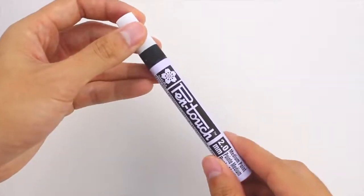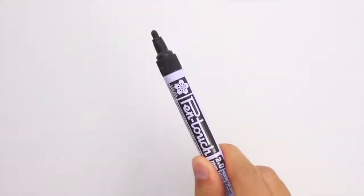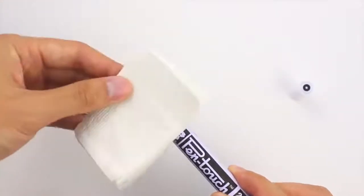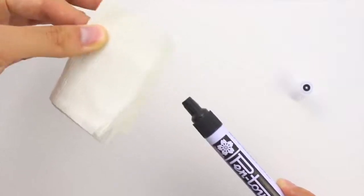First, hold the marker vertically with the nib facing upward and remove the cap. Next, use a folded tissue to pull out the tinted nib so the permanent ink doesn't get on your fingers.